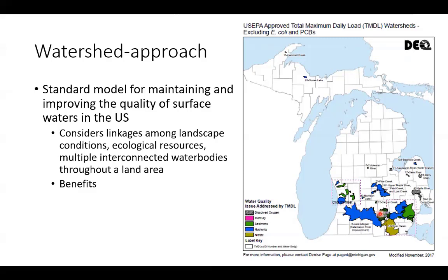These are watersheds for dissolved oxygen, mercury, sediments, nutrients, nitrate, E. coli, and polychlorinated biphenyls — watersheds deemed impaired with regard to these particular pollutants. Dissolved oxygen is not really a pollutant but is a parameter of concern. By looking at a watershed approach, we can do a much broader assessment of pollutant sources, examine interactions between upstream and downstream sources, involve multiple stakeholders throughout the watershed, and integrate TMDLs with other watershed programs.